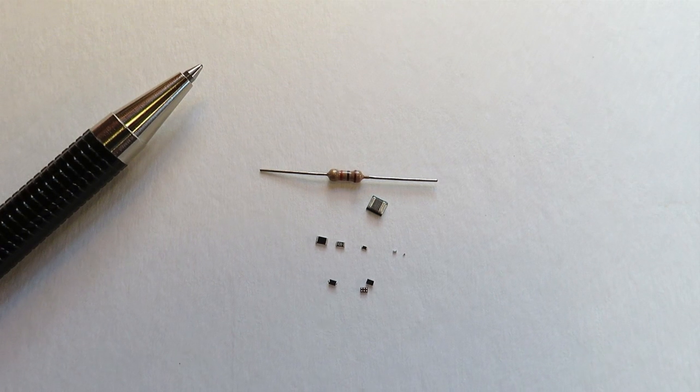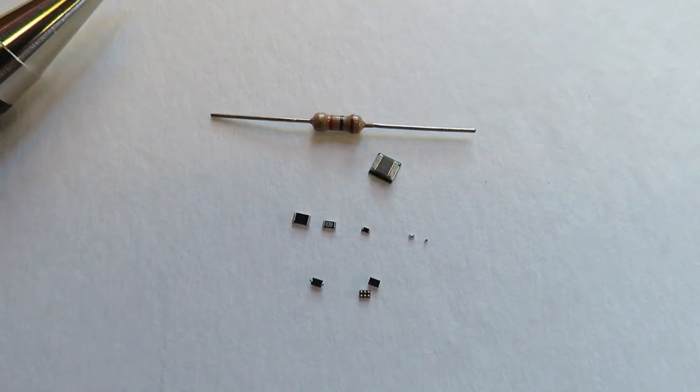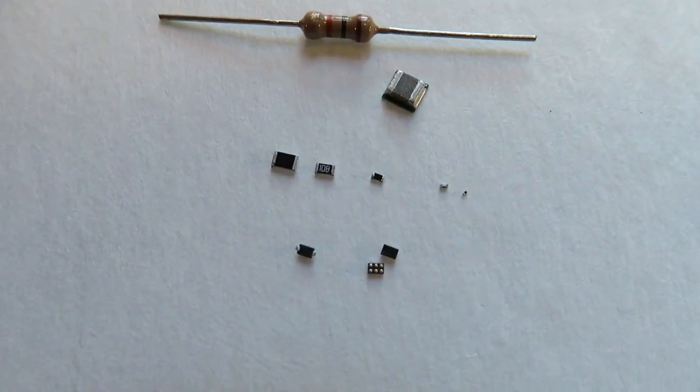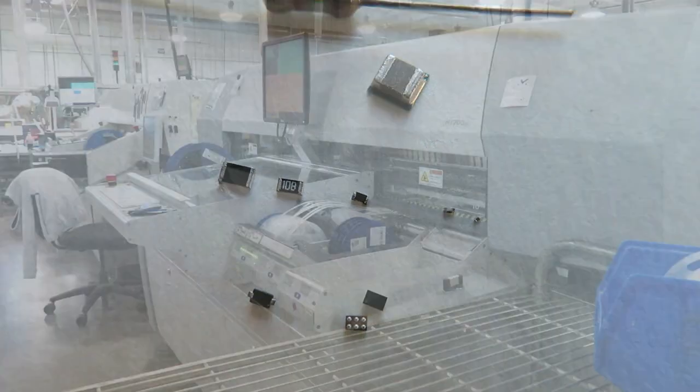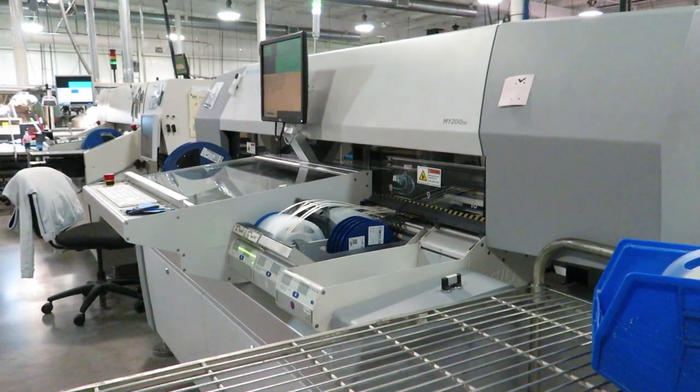It takes some fairly sophisticated equipment and processes to place and solder these SMT packages with high yield and high reliability. Much of it is done with a robotic pick-and-place line.